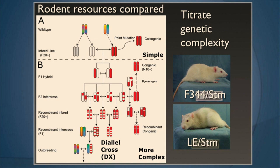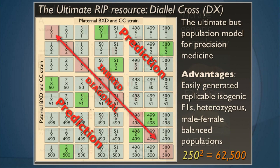If you do it in a mouse, will it be robust enough to translate to a rat or Drosophila? Titrating complexity is a big deal. What I'm going to show you down at the bottom is something called the diallel cross. It's on the complex side, but it's complex with replication, and that's the important distinction between a diallel cross and the diversity outbred.